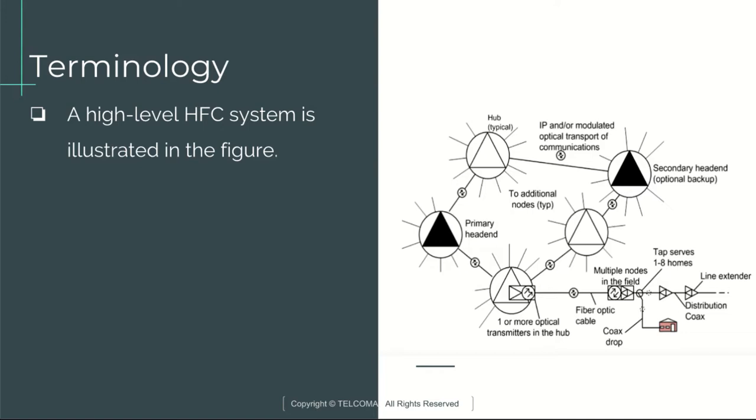Upstream signals are all RF modulated carriers returned over the coax by using lower frequencies on the coax. At the node, they are modulated onto an optical carrier by an upstream transmitter and then transmitted to the hub, usually on a dedicated fiber but sometimes on the same fiber used for downstream but on a different wavelength.